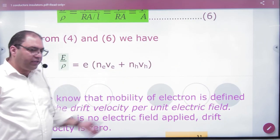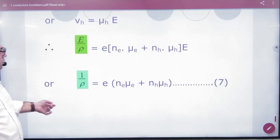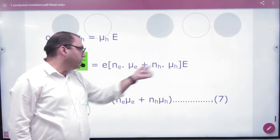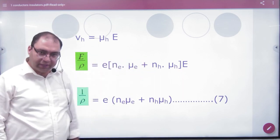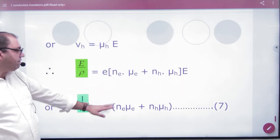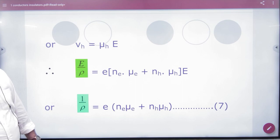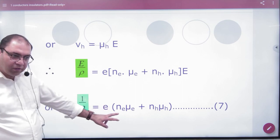VE and VH value, so you have a term mu_e into E, mu_h into E common. E from E cancel, so you have one by rho value.